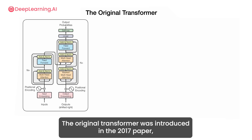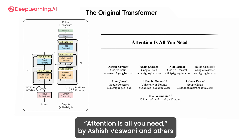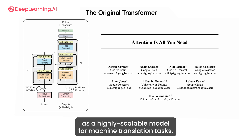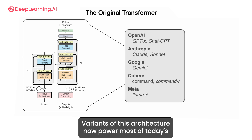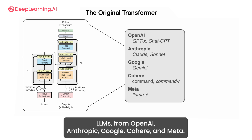The original transformer was introduced in the 2017 paper Attention is All You Need by Ashish Vaswani and others, as a highly scalable model for machine translation. Variants of this architecture now power most of today's LLMs from OpenAI, Anthropic, Google, Cohere, and Meta.